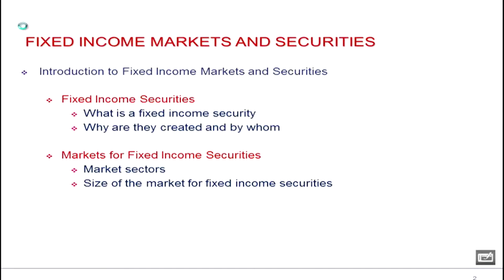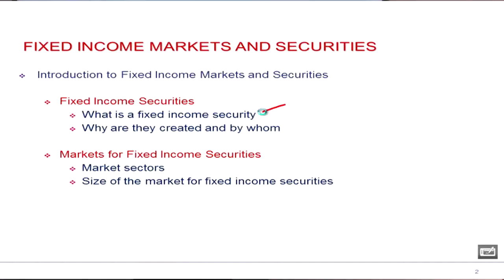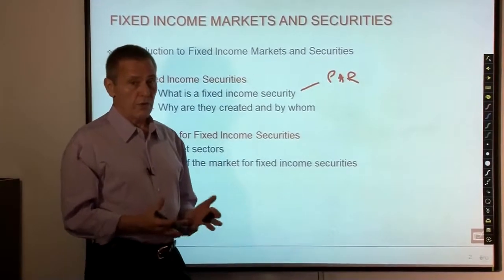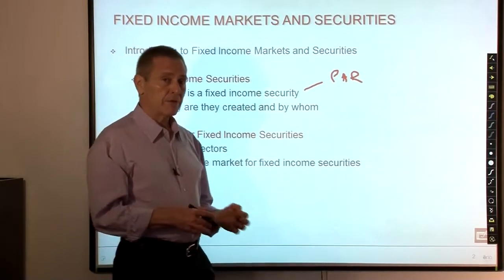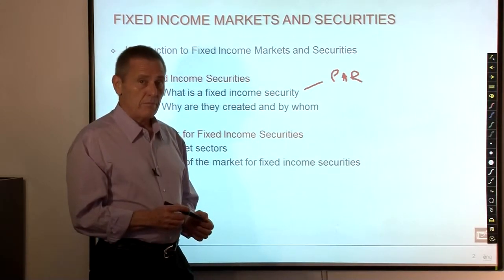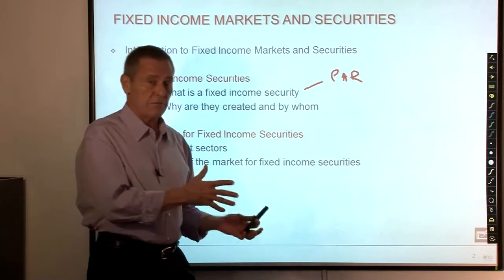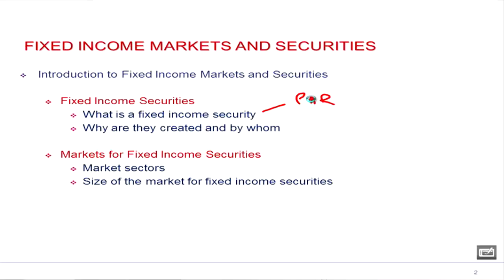When people think about what's fixed in a fixed income security, many think it's probably the par value — which we'll define in detail later — representative of the amount of money borrowed. But clearly par value is not necessarily fixed, because there are securities where the par value will change with the passage of time. Things like inflation-adjusted or Treasury Inflation Protected Securities, or the par value might be affected by the conversion value of convertible securities, where the ultimate maturity value might be defined as the greater of the par value or the value the bond is convertible into.